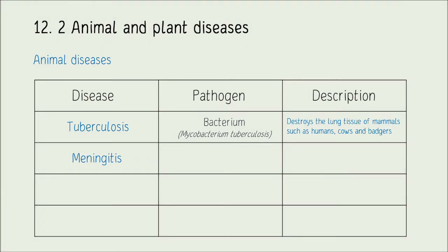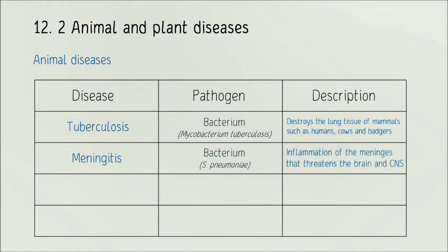Meningitis is caused by a bacterium and is an inflammation of the meninges — the membranes covering the brain. Because it is so close to the brain, it poses a clear threat to the central nervous system. It can spread and cause blood poisoning. Symptoms include rashes, fever, confusion, and sensitivity to light or loud noise. It mainly affects children and teenagers. There are also some viral strains, though bacterial ones are most common. Note: the suffix '-itis' always means inflammation of.